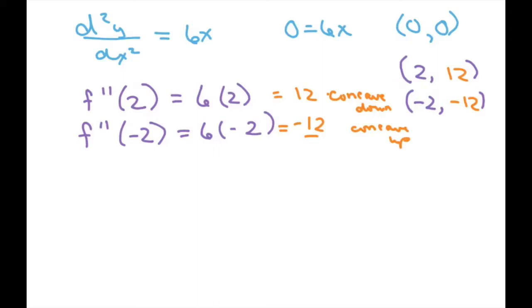So basically, at our original points, at our maximum, 2, negative 16, because this is our 2, this is going to be concave up. And at 2, negative 16, that's going to be concave down. All right.